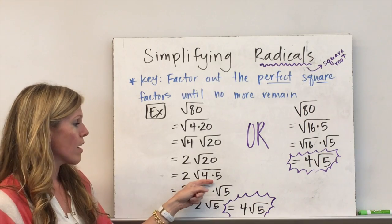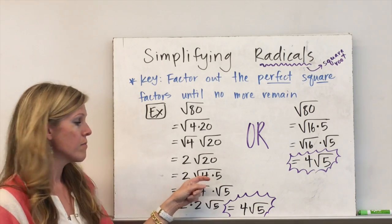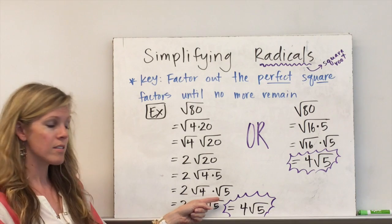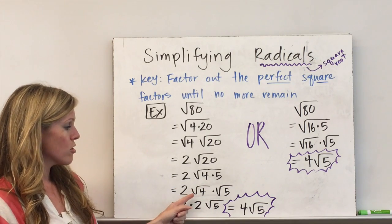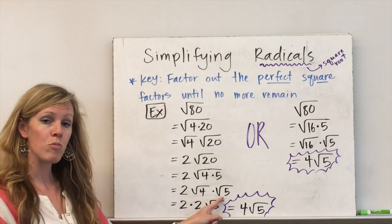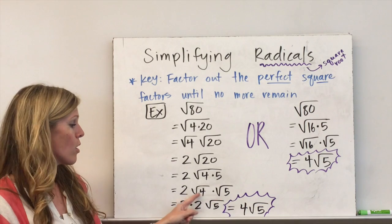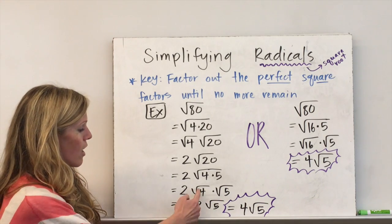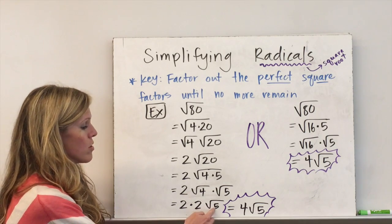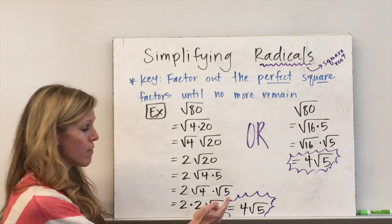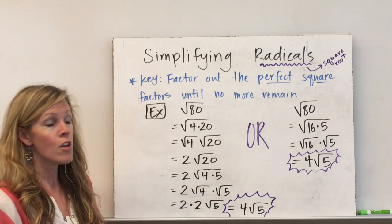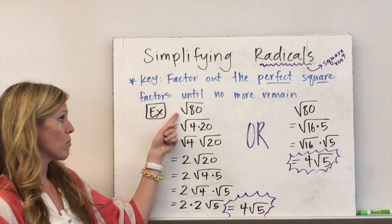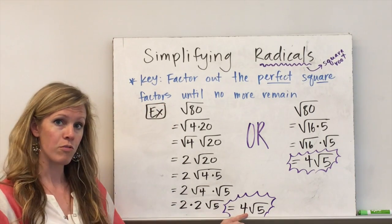Then I look at 20 and realize 4 times 5 is 20. 4 is a perfect square, so I'm repeating the process again. Leaving that 2, times radical 4 times radical 5. Radical 4 is 2, so now I have 2 times 2 times the square root of 5, or 4 radical 5. That's what we would call simplifying radical 80 to its simplest form.